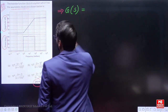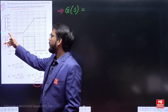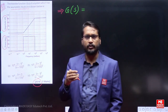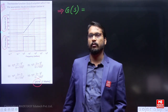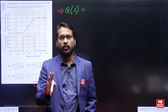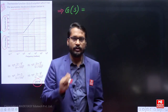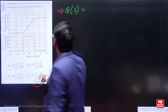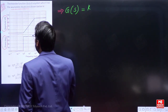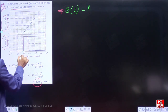First of all, I want to tell you one thing: if you observe the Bode magnitude plot, there is no initial slope — neither positive slope nor negative slope. This means it is very clear that there is no pole at origin and no zero at origin. So I am considering gain K.